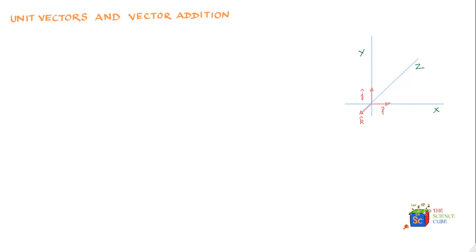Unit vectors give identity to other vectors. If you have a vector A on a coordinate system, the projection of vector A on the x-axis has a value of ax. Now ax is just a scalar — the magnitude of vector A on the x-axis — but if you multiply it with unit vector i, it becomes the component of vector A on the x-axis, giving it the identity of a vector.